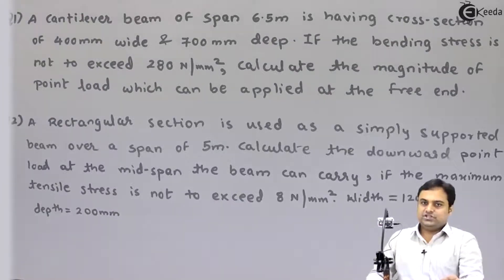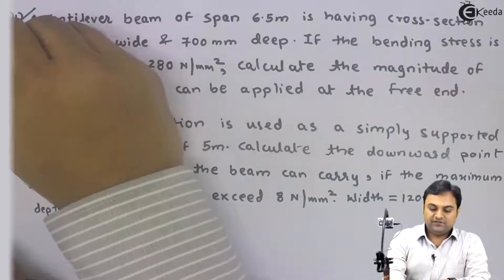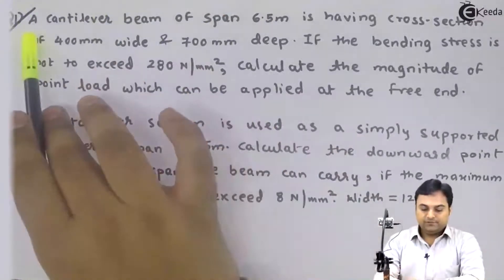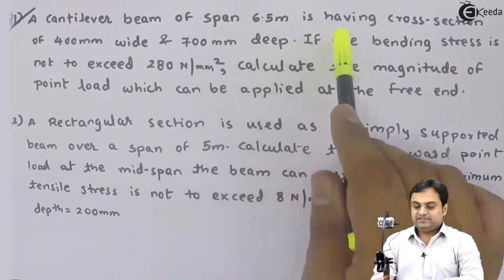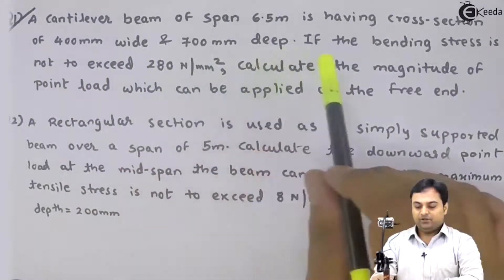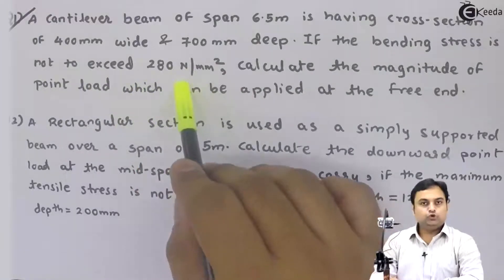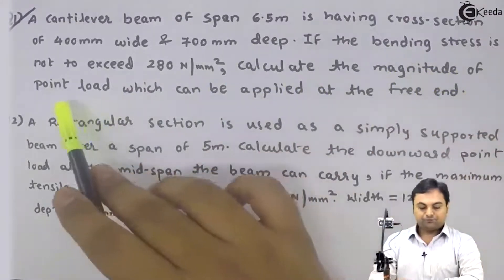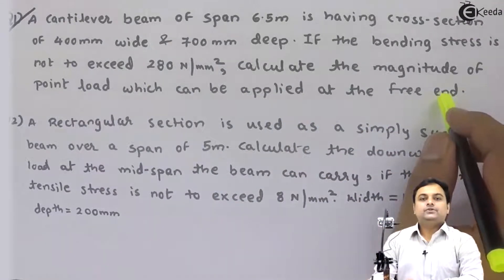We will be starting with question number one. I am marking question number one — this is the first question which we are solving today. The question is: a cantilever beam of span 6.5 meters is having a cross section of 400 mm wide and 700 mm deep. If the bending stress is not to exceed 280 Newton per mm², calculate the magnitude of point load which can be applied at the free end.